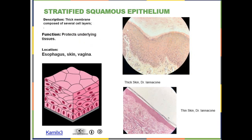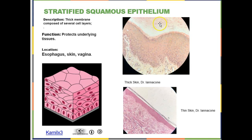Then you have stratified squamous epithelium: many layers of flat cells, primarily for protection against friction. You find it in the esophagus, skin, and vagina. In these skin slides from our lab, at the bottom of the epithelium is where there would be a basement membrane. Everything from there upward is all the epithelium — the epithelial cells here are all alive, and the dead skin cells are on the surface. All of the connective tissue sits beneath the epithelium.